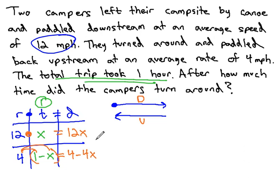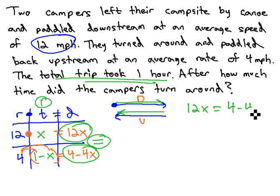In other words, these two distances for upstream and downstream are equal to each other. The 12x is equal to the 4 minus 4x, because they're both the same distance. The distance down is the same as the distance back up. Notice the picture almost looks like an equal sign. 12x is equal to 4 minus 4x.